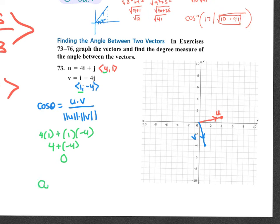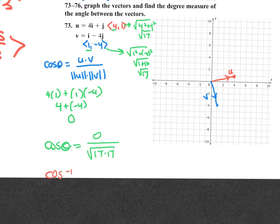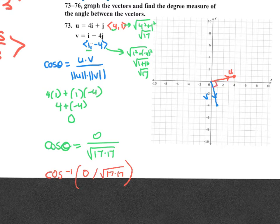Since the dot product is 0, it doesn't matter what the denominator is. The magnitude of U would be square root of 4 squared plus 1 squared — square root of 17 — times square root of 1 squared plus negative 4 squared — also square root of 17. So it's 0 over square root of 17 times 17. The cosine inverse of 0 is 90 degrees, which makes sense because this looks like a right angle. Those two vectors are orthogonal — perpendicular — dot product is 0, they form a 90-degree angle, and their slopes would be opposite reciprocals.